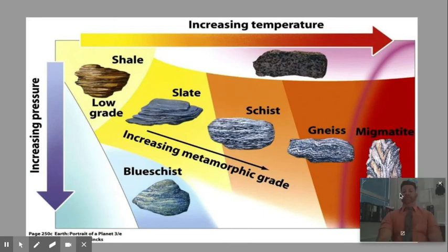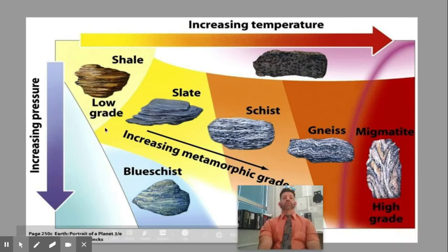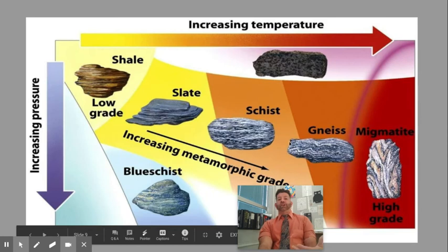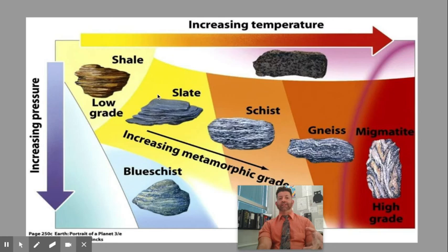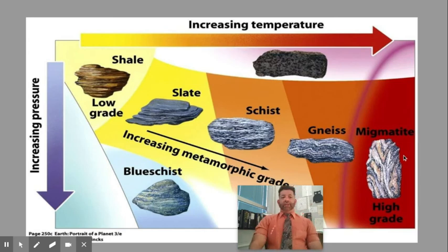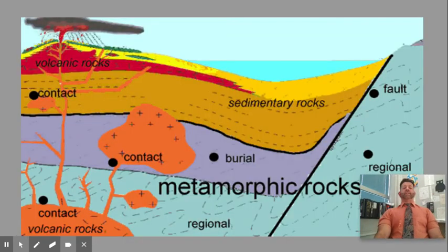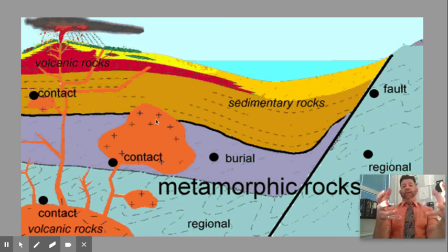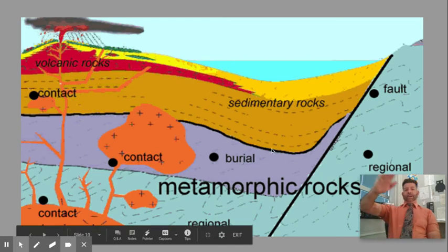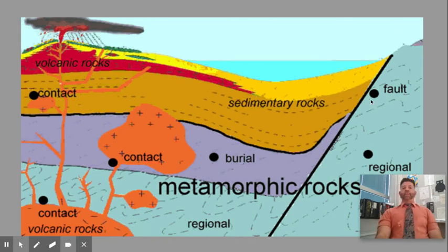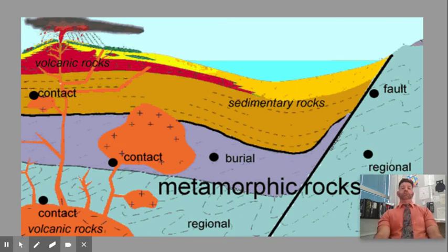With increasing pressure and temperature you get greater metamorphosis and higher grades, going from low grade into slate, into schist. Major types of metamorphism include contact — where magma comes into the rock and heats it — burial, where rock just gets stacked up and all that pressure causes it to shift, and regional, which happens over such a huge area, often at subduction zones. This is where we start to tie it back into plate tectonics, which is why we studied that first.